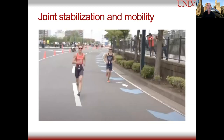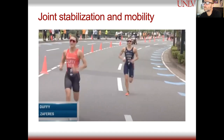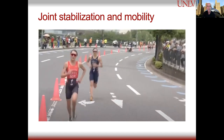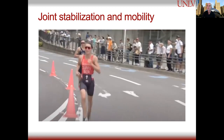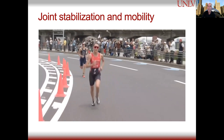Now let's look at Flora Duffy again from a front view. She actually has a little bit of a crossover gait, but she's earned it — and you'll notice when she crosses over how stable her hips are. She's crossing over a little bit, but the stability is just unbelievable. This is an Olympic race near the end where she's going to run something like a 35-minute 10K off the bike, and still very, very stable. This is what we want to aim for.